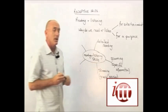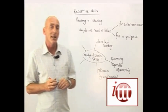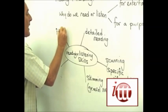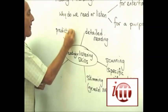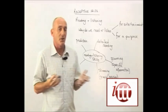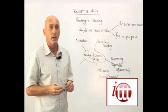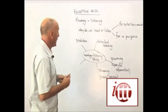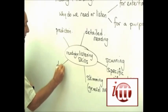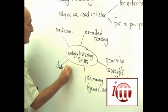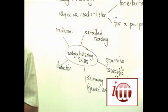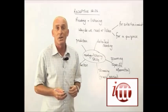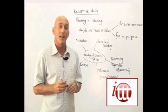Other types of reading skill that we can actually teach include reading for prediction. So having read a certain amount of various texts, we can then say what we think is going to happen next. And the final one is for deduction — so from the information that's been given, can we make some form of inference, for example, about who actually wrote that?